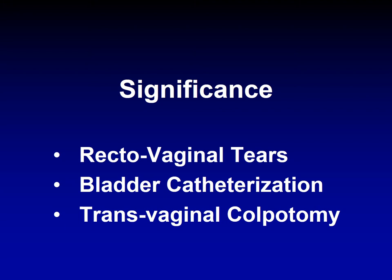There is also another procedure called transvaginal colpotomy — essentially an ovariectomy through the vagina, also called a vaginal spay. Because the ovaries are retroperitoneal, we make an incision in the dorsal wall of the vagina, grab the ovaries with an instrument, and take them out through the vagina without entering the peritoneal cavity. This is very important and these procedures are significant in equine practice.